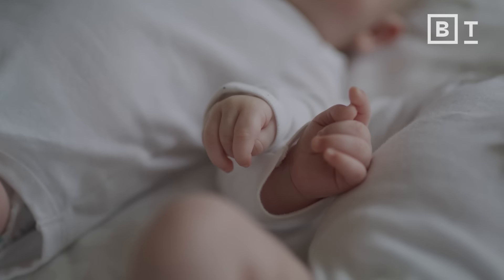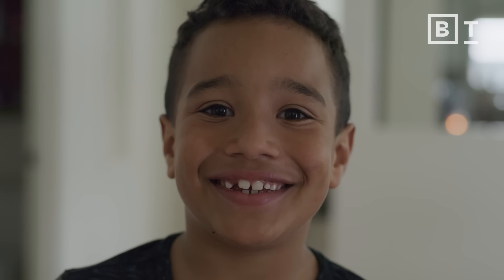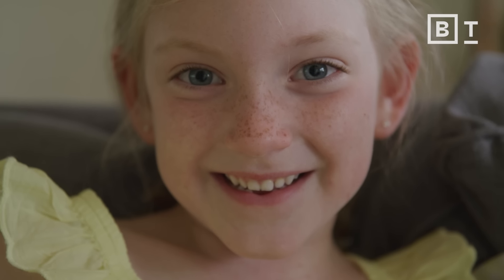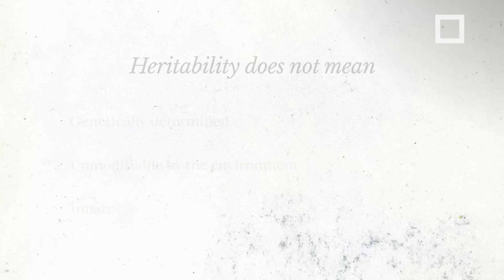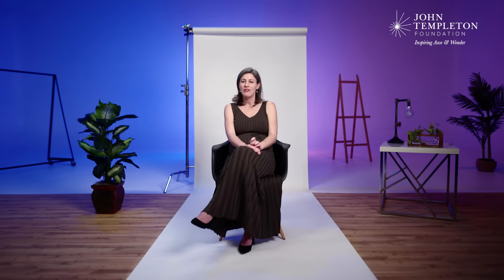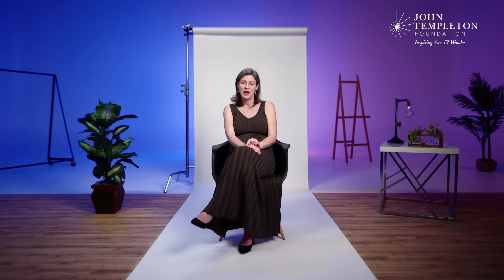It's a really obvious thing when it comes to plants, but it's a really difficult thing for people to keep in mind when we're talking about individual versus group differences. This relationship between heritability and response to the environment is a complicated one. Heritability is the proportion of variation in a population that's due to genetic differences between people. It's a confusing term because people misinterpret heritable to mean genetically determined, unmodifiable by the environment, or innate.